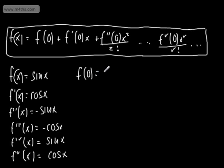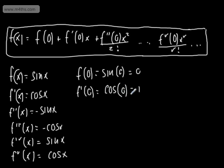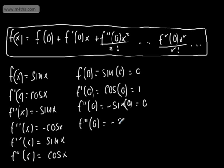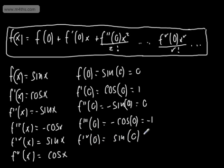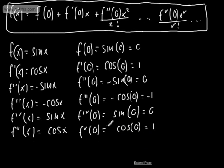So f of 0 equals sine of 0, which is 0. f dashed of 0 equals cos of 0, which is 1. The second derivative f double dashed of 0 equals minus sine of 0, which is again 0. The third derivative gives us minus cos of 0, which is minus 1. The fourth gives us sine of 0, which is 0. And the fifth, taking cos of 0, gives us 1. So the pattern of values at 0 is: 0, 1, 0, minus 1, 0, 1, and so on.